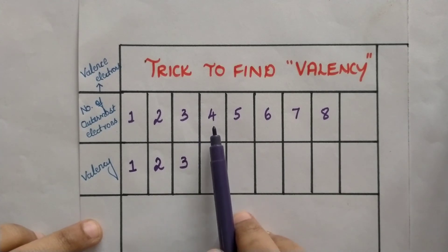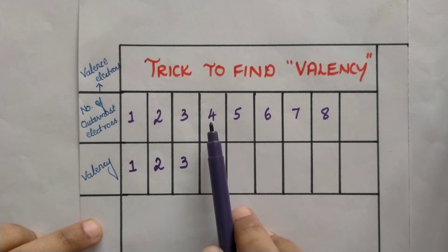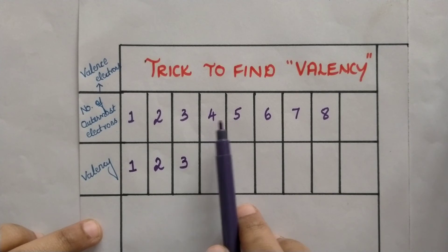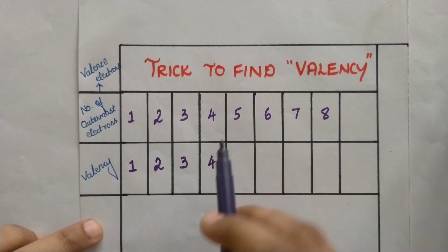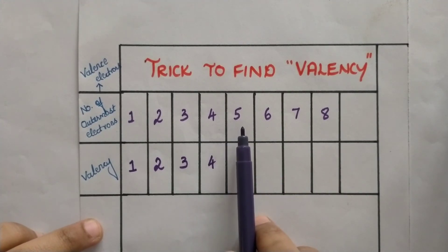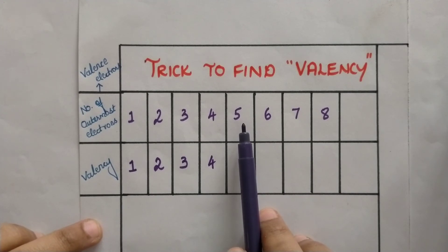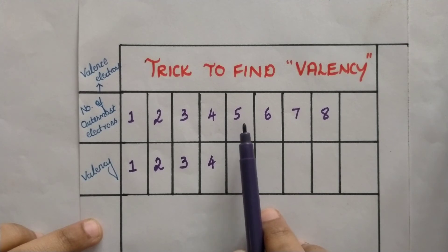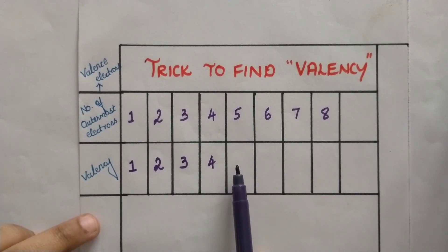For an element with 4 electrons in its outermost orbit, it can either donate 4 electrons or gain 4 electrons to acquire the octet configuration. Both options are the same, so the valency becomes 4. Coming to 5 outermost electrons, it's the opposite of what we've seen so far. The element already has 5 electrons, so it needs only 3 more. It is easier to gain 3 electrons rather than donate 5, so the valency becomes 3.